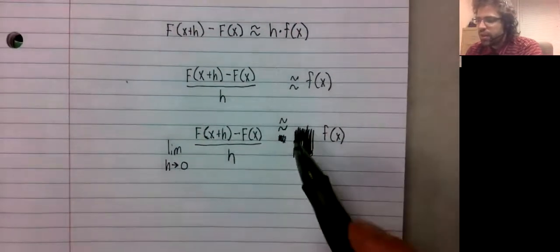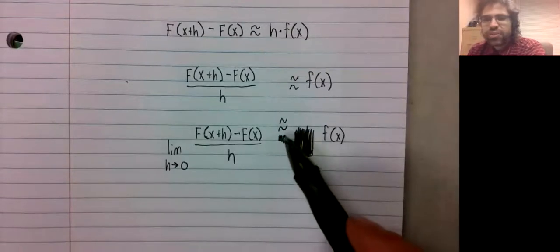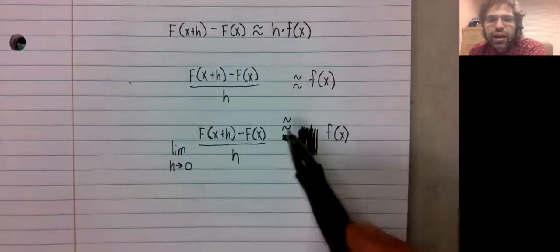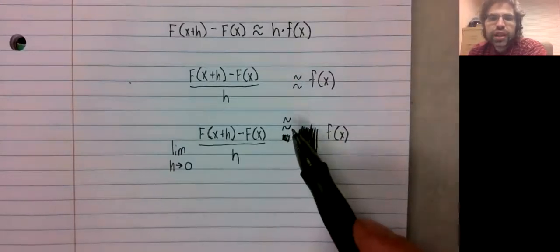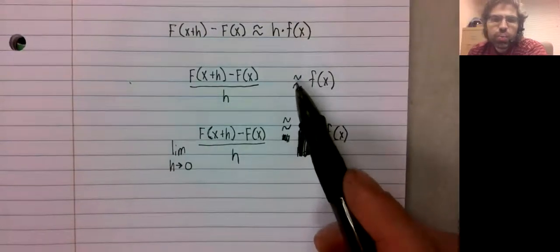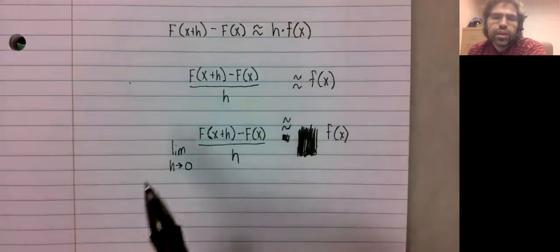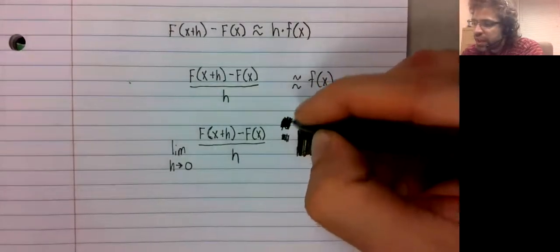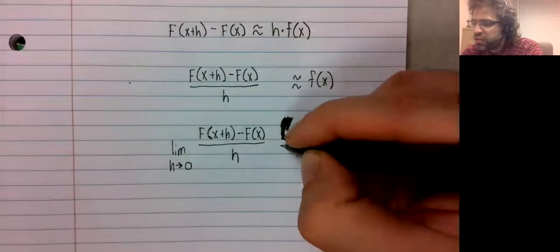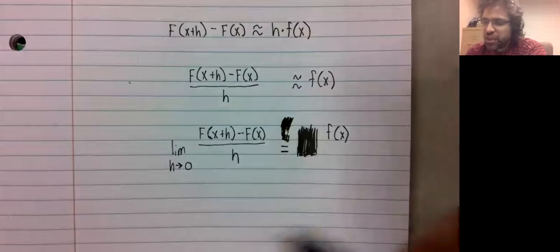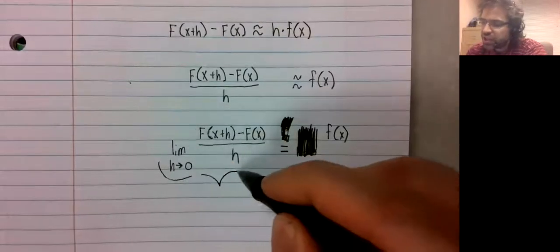I replaced this with a squiggly equal sign, but actually I was just looking ahead. Instead, this is approximately equal to. In the limiting case, as h approaches 0, this equality becomes exact.